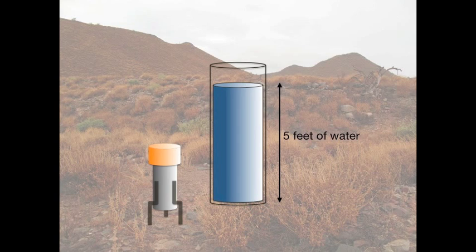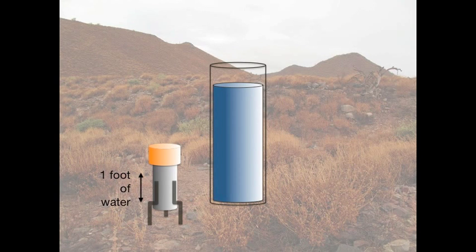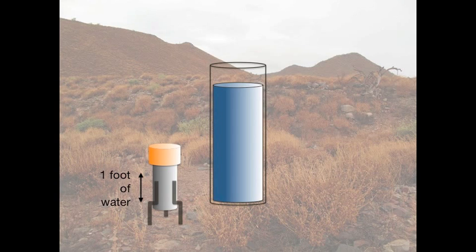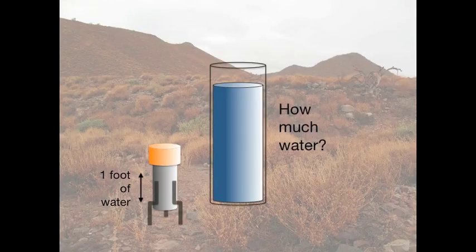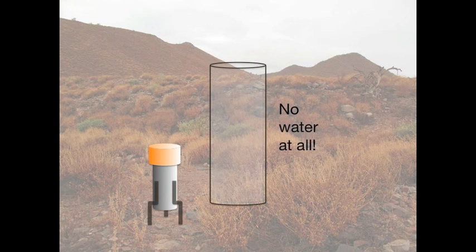Return to the glass cylinder one year later. Suppose the rain gauge reports that exactly one foot of rain fell during the year. The cylinder started the year with 5 feet of water, and a foot of rain fell during the year. So how much water will you find in the cylinder after a year? The most likely answer is: no water at all.